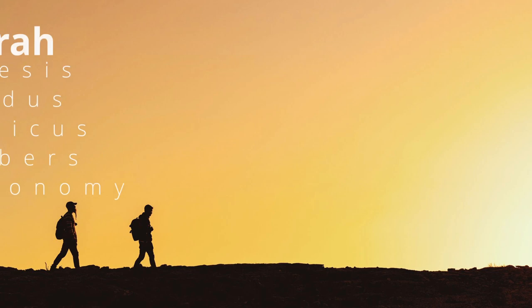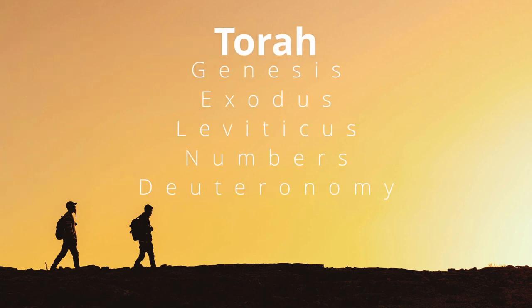The first five books — Genesis, Exodus, Leviticus, Numbers, and Deuteronomy — put a little bracket around those. That's called the Torah, and we're going to talk about that more after we're done with the first three chapters of Genesis. That's the five books of Moses, and whenever Scripture mentions 'the law and the prophets,' this is what they're pointing to: the Torah.